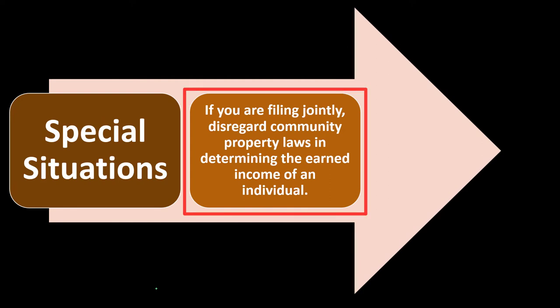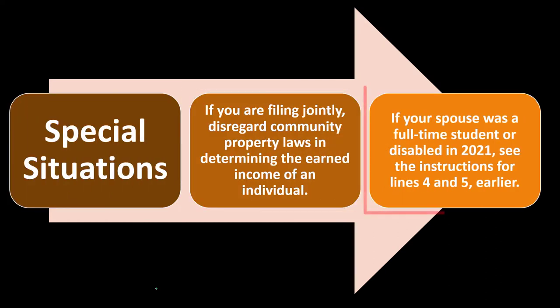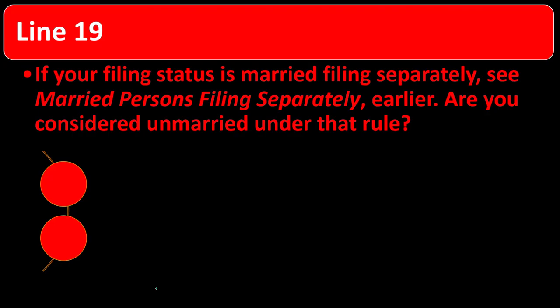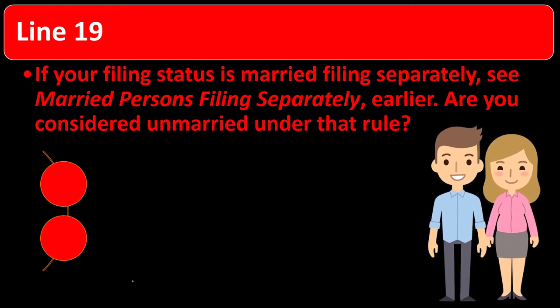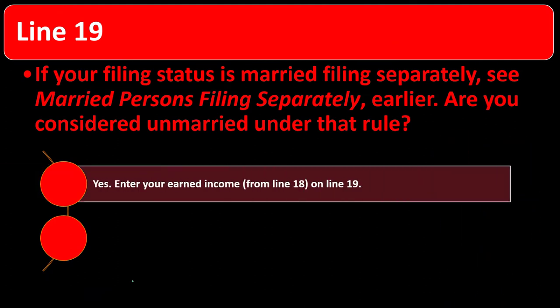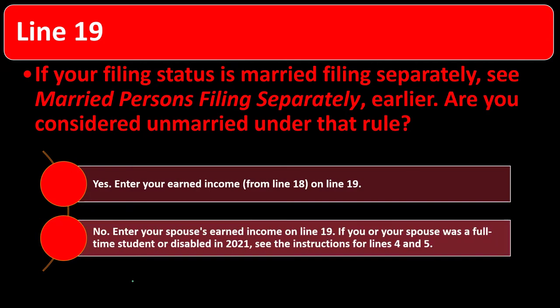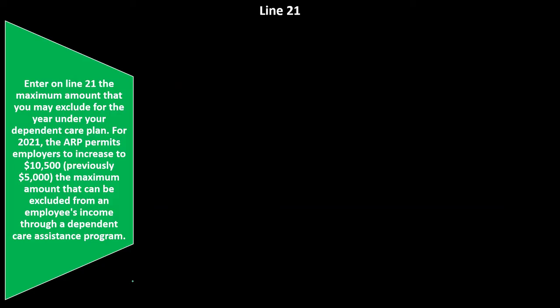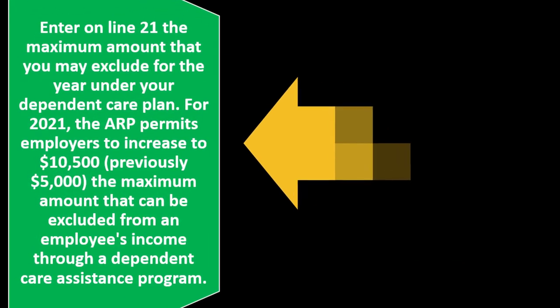Special situation: If you are filing jointly, disregard community property laws in determining the earned income of an individual. If your spouse was a full-time student or disabled in 2021, see the instructions for lines 4 and 5. For line 19, if your filing status is married filing separately, see the married persons filing separate section. If married, you're usually filing married filing jointly; otherwise there could be restrictions on whether you can take the credit. Enter your earned income, or if applicable, your spouse's earned income on line 19.